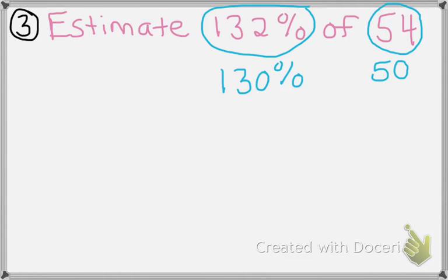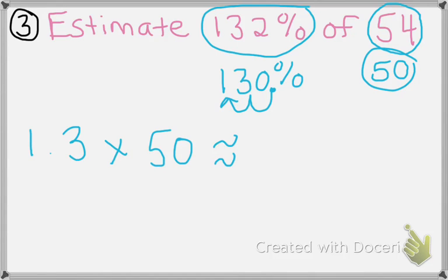So we're going to use 130% and 50. So I'm going to put this into a decimal form. So invisible decimals here. I move it over twice to the left. So now I have 1.30 or just 1.3. When you multiply out 1.3 times 50, you get approximately 65. So your answer is 132% of 54 is approximately 65.